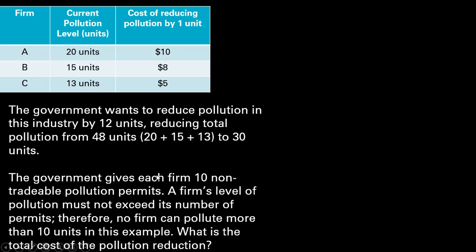The government gives each firm 10 non-tradable pollution permits. A firm's level of pollution must not exceed its number of permits. Therefore, no firm can pollute more than 10 units in this example. What is the total cost of the pollution reduction?